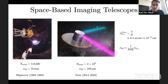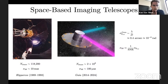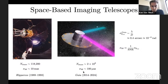In space you can do much better, since you're not limited by the atmosphere. The first serious astrometric space mission was Hipparcos — the satellite, not the person — launched in the late 1980s, which catalogued about 10⁵ stars with 10 milli arc second precision per measurement. Right now Gaia is running with a factor of 10⁴ increase in catalog size and about a factor of 100 improvement in precision per measurement, and it's still running today.